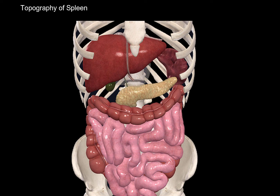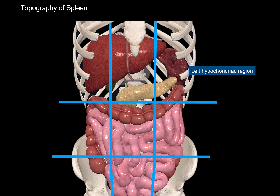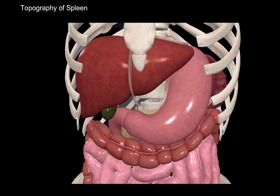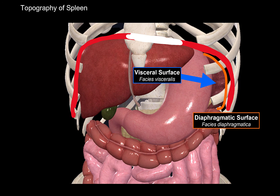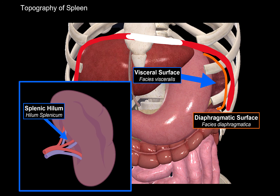Looking at the abdominal cavity anteriorly, the spleen lies in the left hypochondriac region. The spleen has two surfaces: the diaphragmatic surface, which faces the diaphragm, and the visceral surface, which is close to the stomach, the pancreas, and even the left kidney and the transverse colon. On the visceral surface, you'll find the splenic hilum, which is the entrance and exit point for blood vessels and nerves.